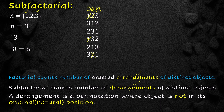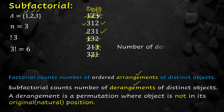We cancel out the original positions of 3 as well. Note that four permutations are cancelled out where elements are in their original positions. The two remaining permutations are ordered arrangements where the elements are not in their original positions — these two are derangements. Therefore the number of derangements is equal to 2, meaning the sub-factorial of 3 is equal to 2.